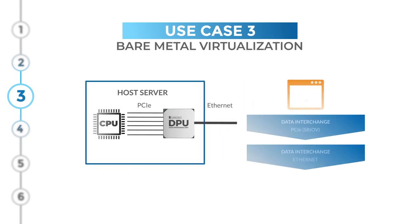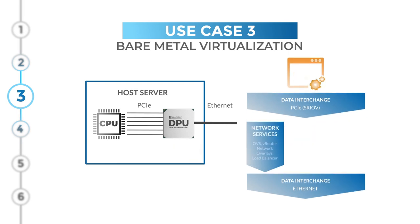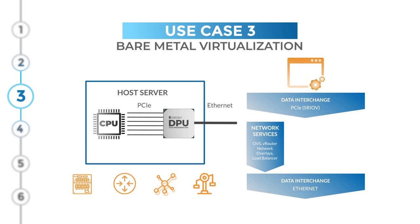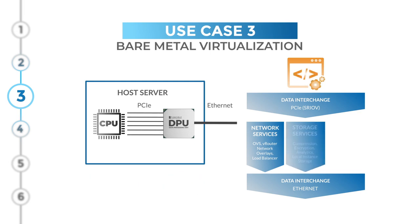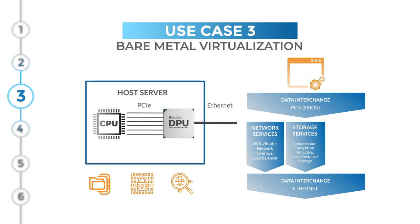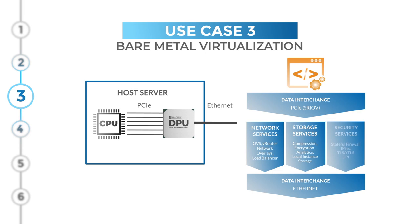The Fungible DPU supports data interchange through PCIe SR-IOV and IO virtualization in hardware, and offers full programmability of networking, storage, and security services. It provides flexibility to customize network functions and protocols — such as virtual switching, routing, network overlays, and load balancing — and offloads the storage stack from the CPU, supporting both local and remote storage with data services such as compression, encryption, and analytics.